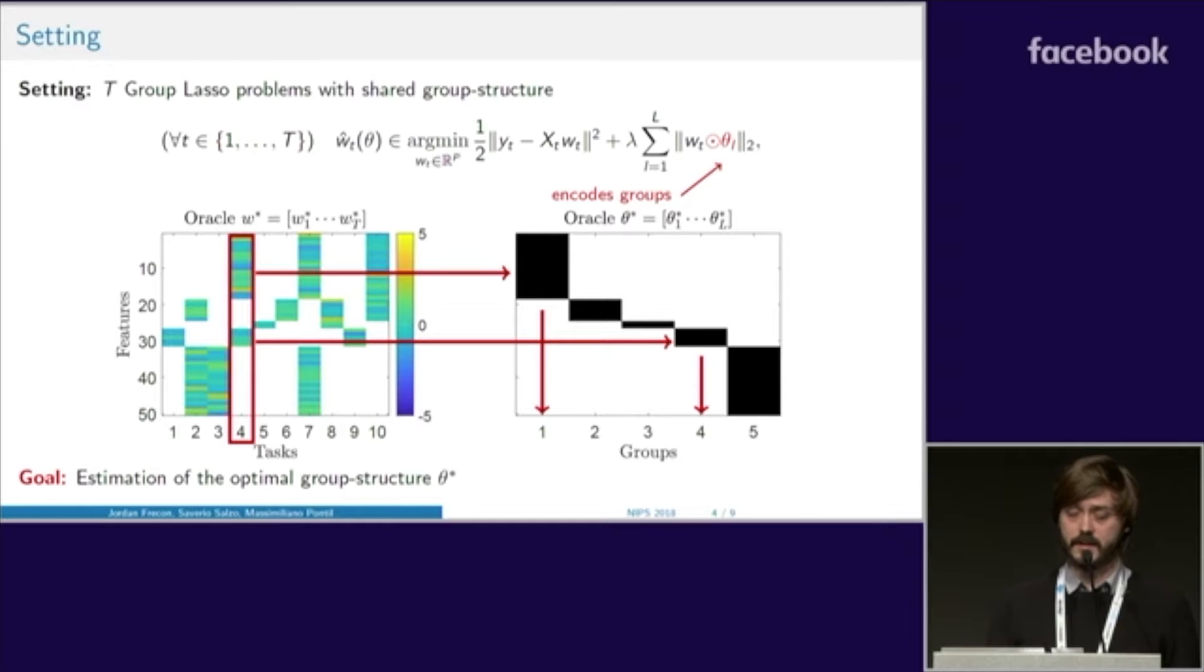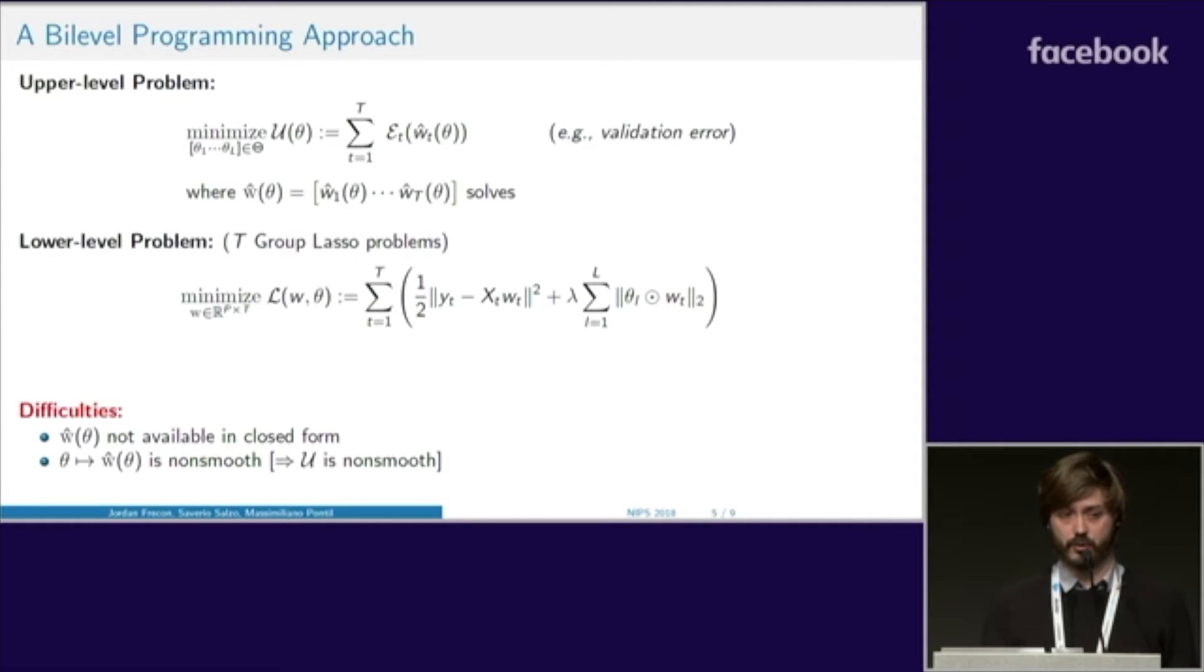To learn theta, we propose a bi-level approach. The lower-level problem is made of the T group lasso problems, and the upper-level problem permits selecting theta according to some criterion. For example, you could choose the validation error. U of theta will measure how well your solution generalizes to new data. However, there are two main difficulties.